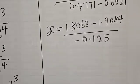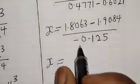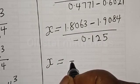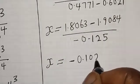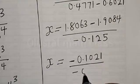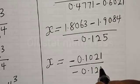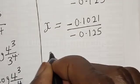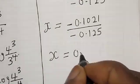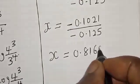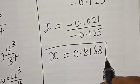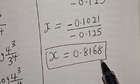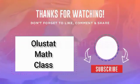Our numerator becomes 1.8063 minus 1.9084, that is minus 0.1021, divided by minus 0.125. Therefore, our final answer is x equals 0.8168. If you have enjoyed the class, please don't forget to like, share, comment, and subscribe. If you have a better method, kindly let us know. Thank you so much, we'll see you next time.